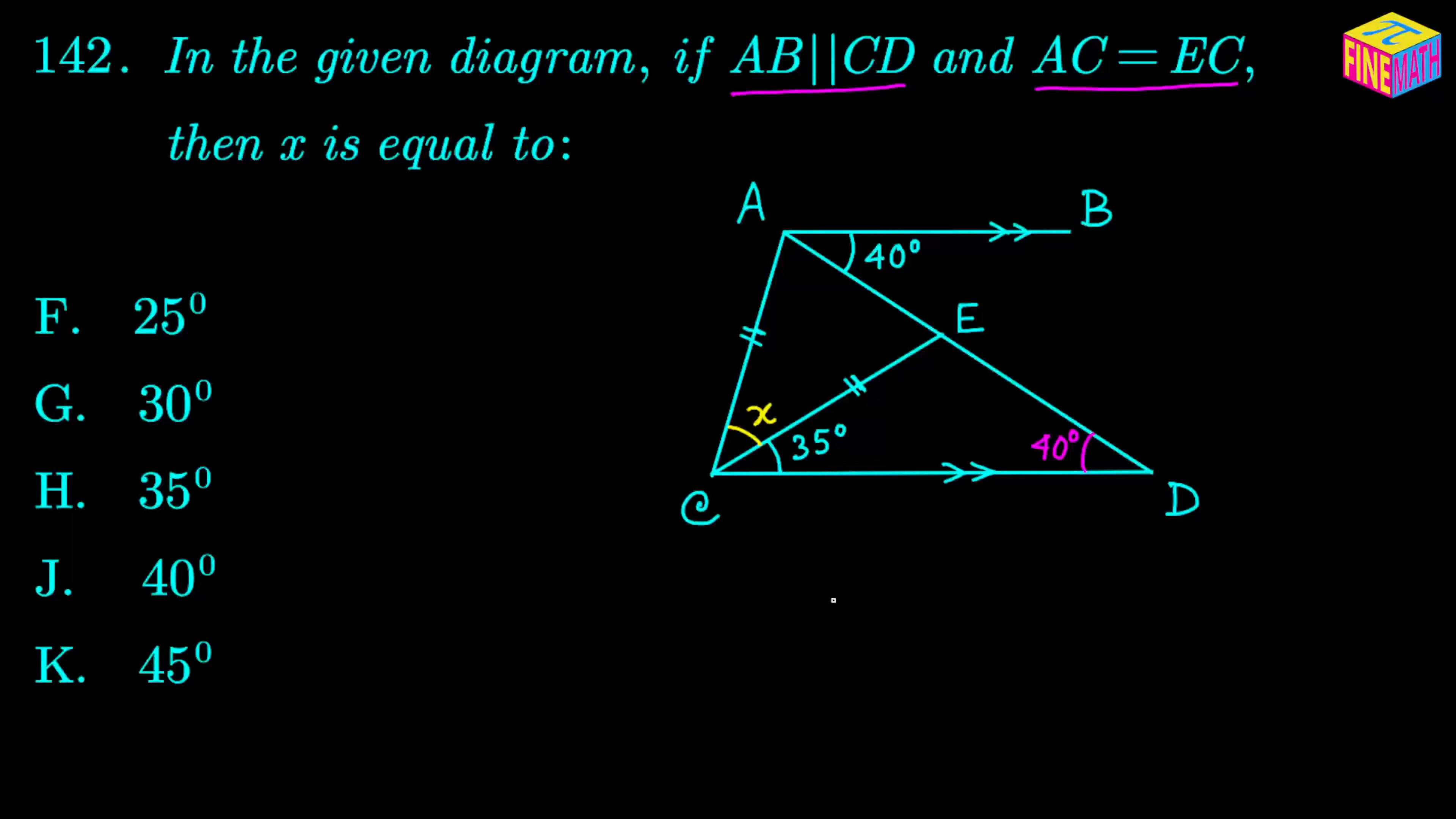And now if we consider the triangle CDE, in that triangle we know two angles by now: we have a 35 degree angle and a 40 degree angle. And if you think about this exterior angle right here, which is the AEC angle, that angle would be the sum of the two furthest interior angles, and that would be equal to 40 plus 35, that's 75 degrees.